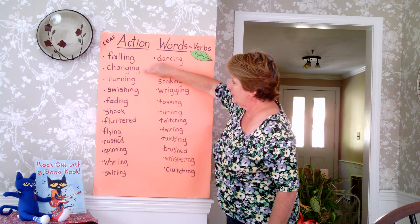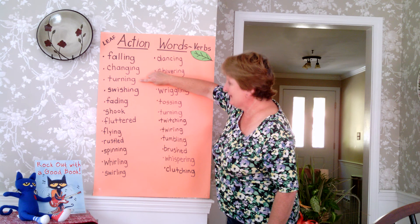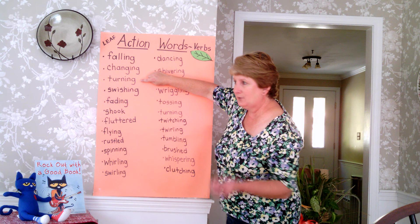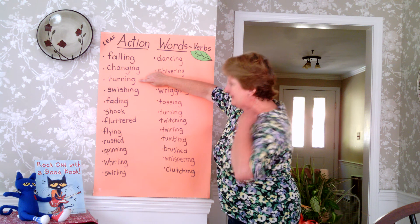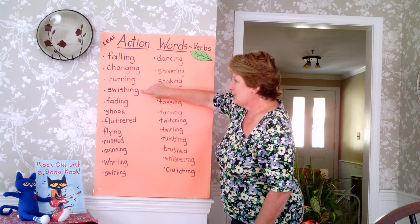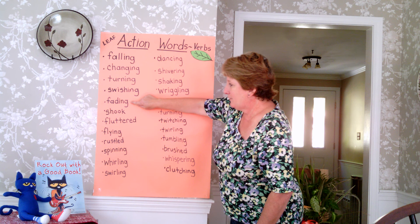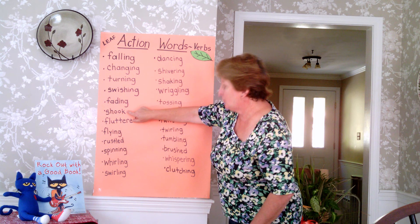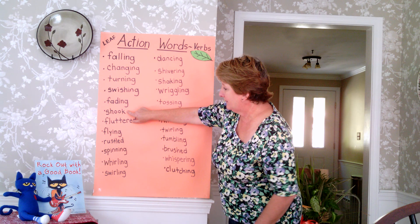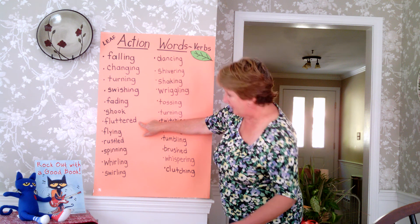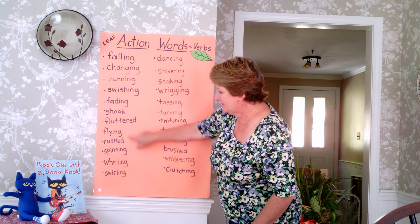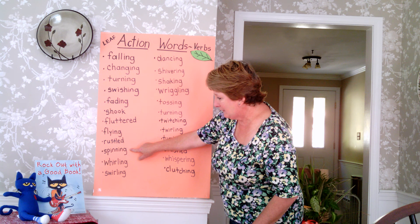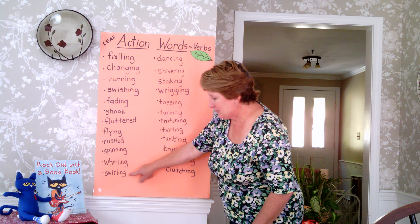From the story we took 'falling' off the cover, 'changing,' 'turning.' You're welcome to read them with me. Turning, swishing, fading — that's when the color kind of goes away and they're less bright. Shook — I could have done 'shaking.' Fluttered — I could have done 'fluttering.' Flying. Rustled, or rustling. Spinning. Whirling. Swirling. Are you hearing a lot of '-ings'? Because I am. I chose this book for a special reason — I knew it had many, many verbs or action words in it.